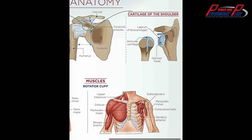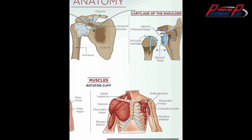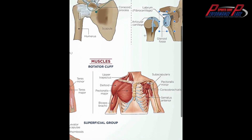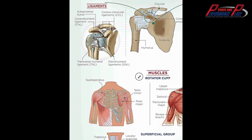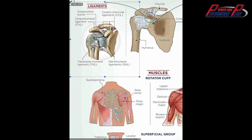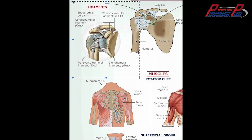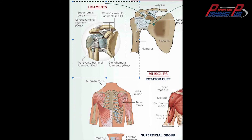We learned that the cartilage deepens the socket roughly 70% with the glenoid labrum, and it assists in really making it so we don't dislocate our shoulder. So these ligaments do have a function, and a lot of times if we're not letting the other groups do their job, these things suffer in the long term.